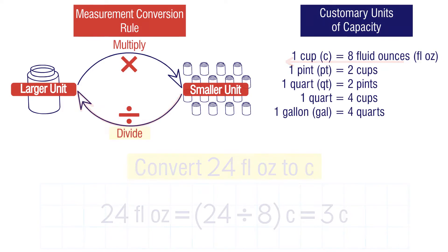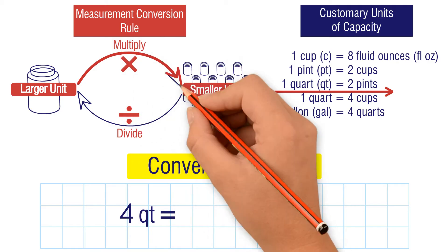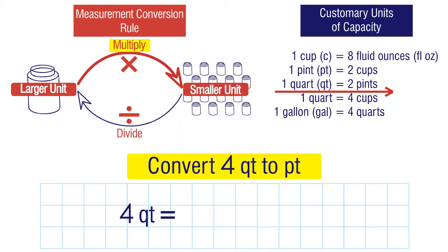Let's do another example. Convert four quarts to pints. We're going from larger units to smaller units, so we need to multiply. One quart is equal to two pints, so we multiply four by two to get eight pints. So four quarts is equal to eight pints.